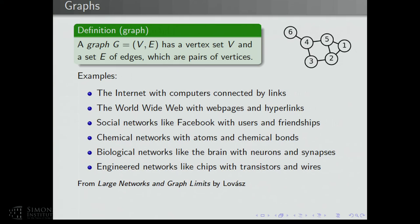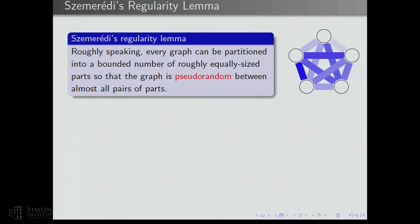These examples come from the nice book of Lovász on large networks and graph limits. From now on, I'm going to talk about theoretical aspects. Szemerédi in the mid-70s developed something called the regularity lemma. This is an incredibly powerful tool in graph theory. Roughly, it says that every graph can be partitioned into a bounded number of roughly equal-sized parts so that the graph is pseudorandom between almost all pairs of parts.